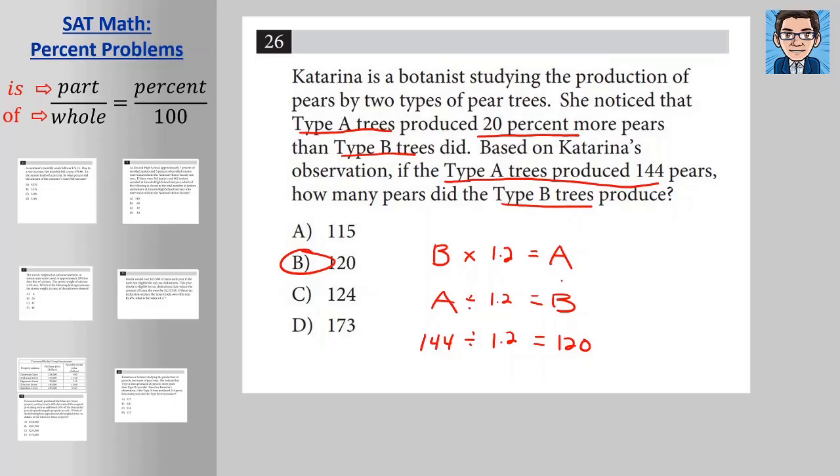Now we can check that too. If that was a little confusing, we can just check it to make sure. So type B is 120 and it tells us we produce 20% more. So times 0.2, it means we're going to produce 20% of 120, which is 24 and that gets us 144. So it checks out.